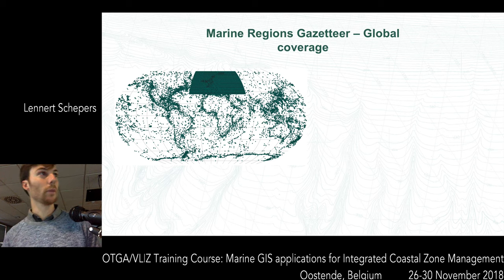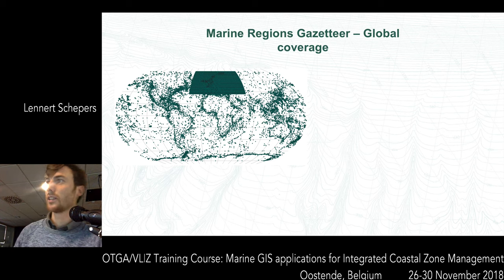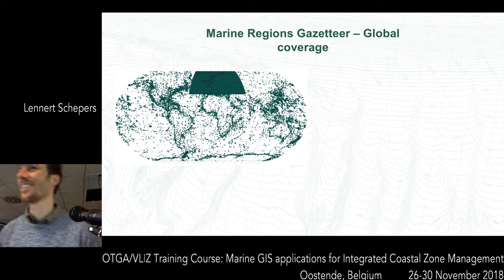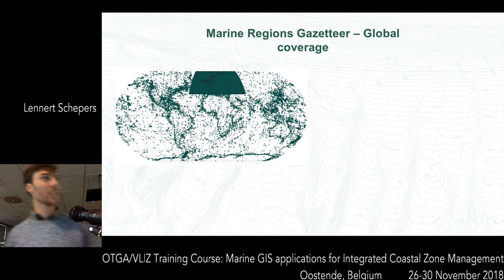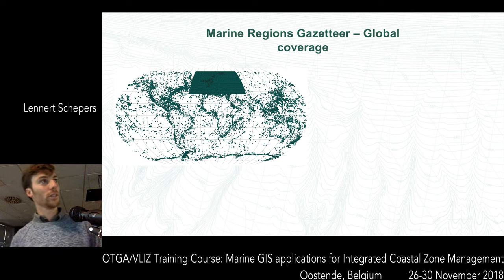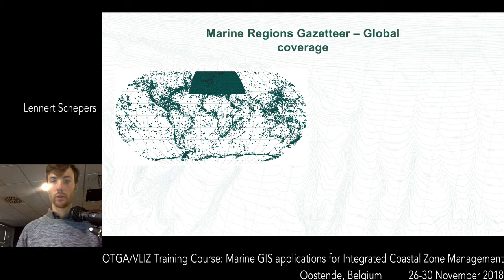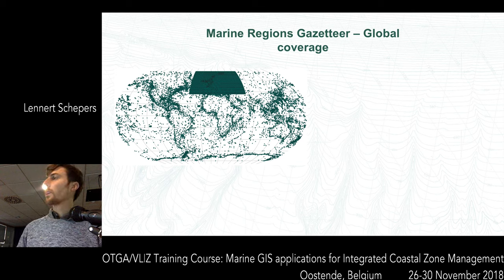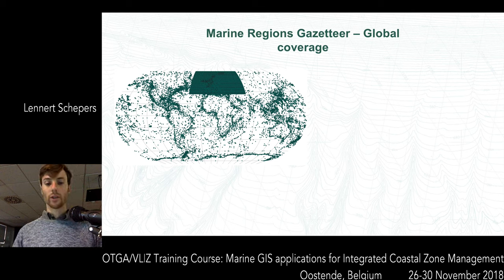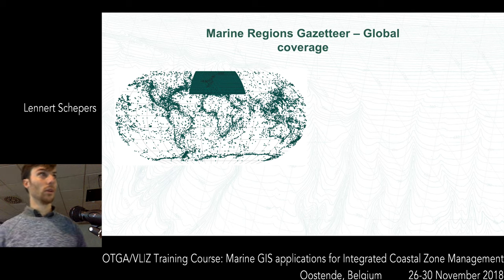Here you see a world map. Does anyone have an idea about the projection of this world map? I mentioned it yesterday. Yes, it's the Robinson projection. You can see some outlines of the countries, but these are actually all dots representing points or records from the Marine Regions gazetteer. Every dot represents a record in our database, and you can see that we have acquired a global coverage.